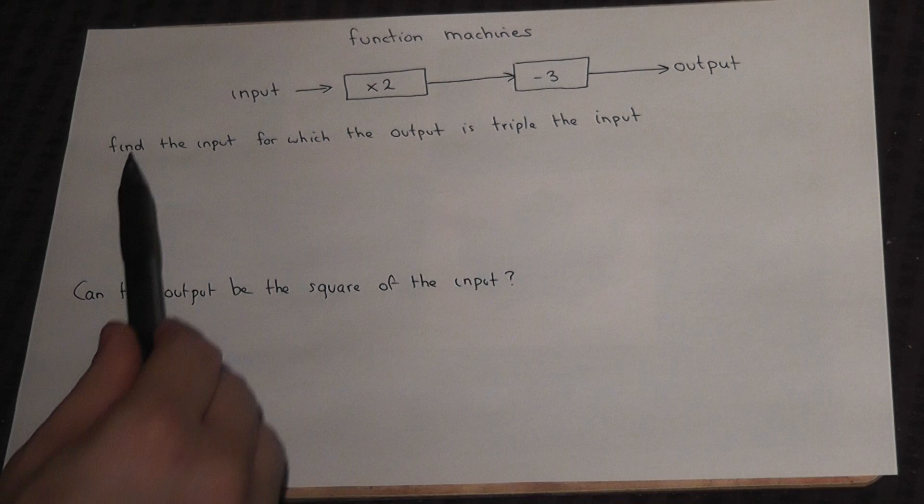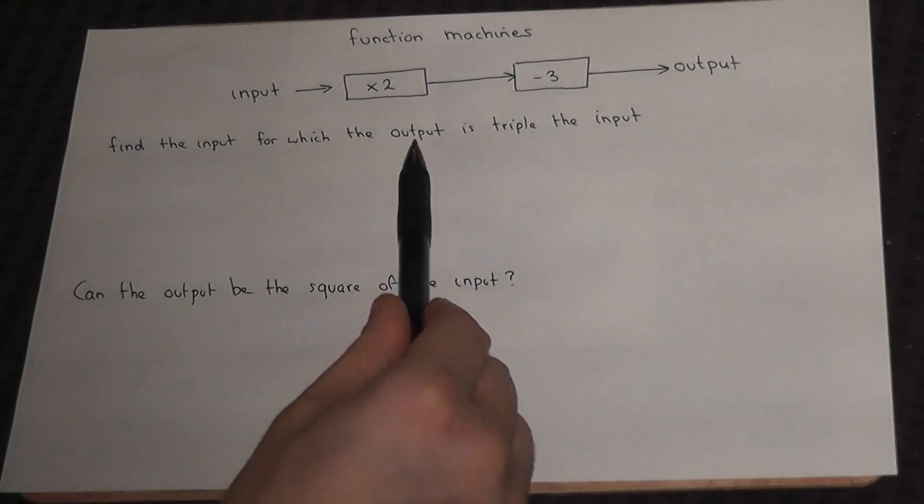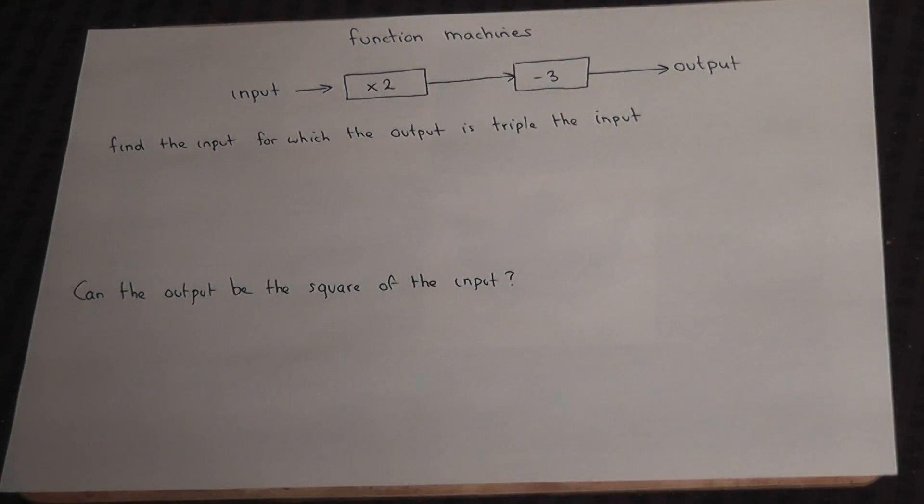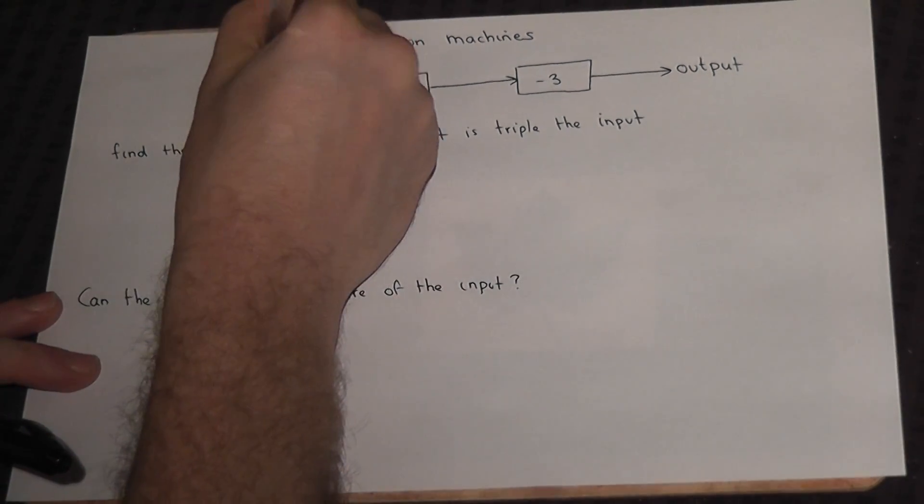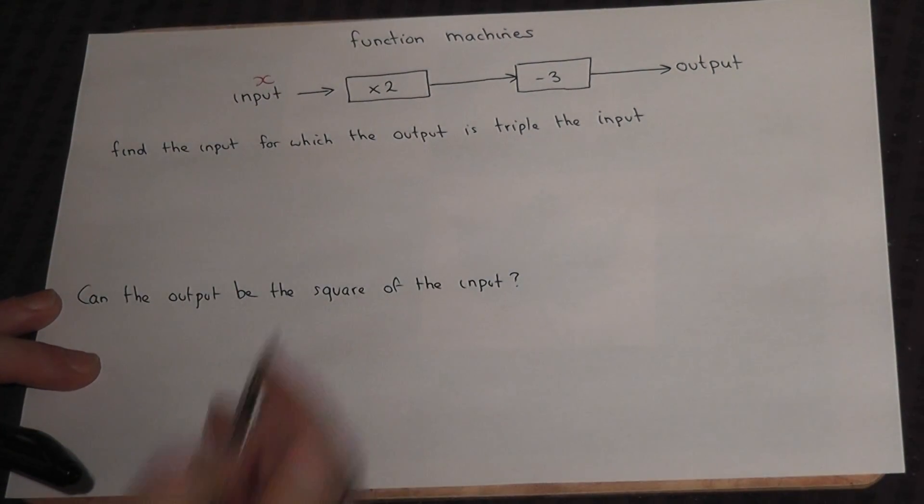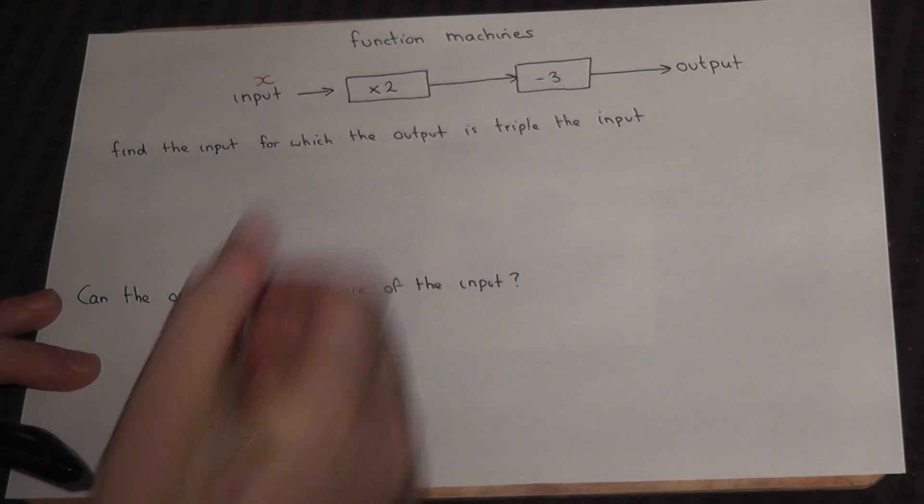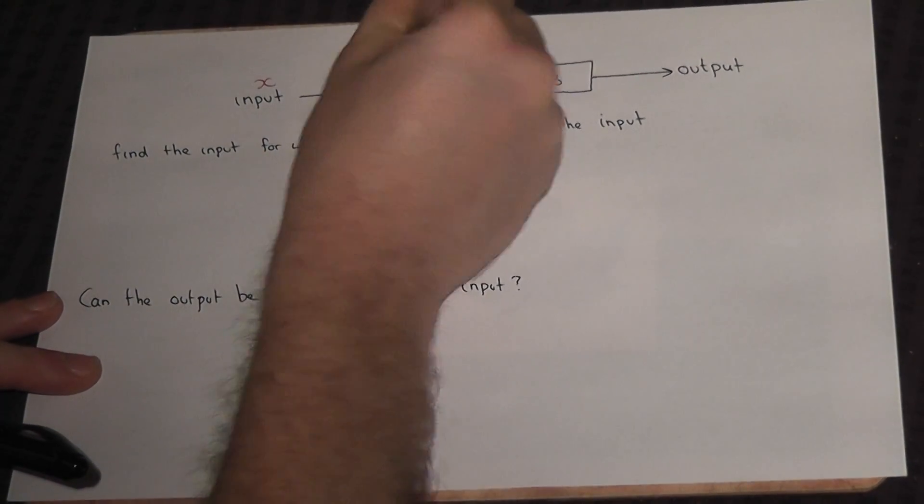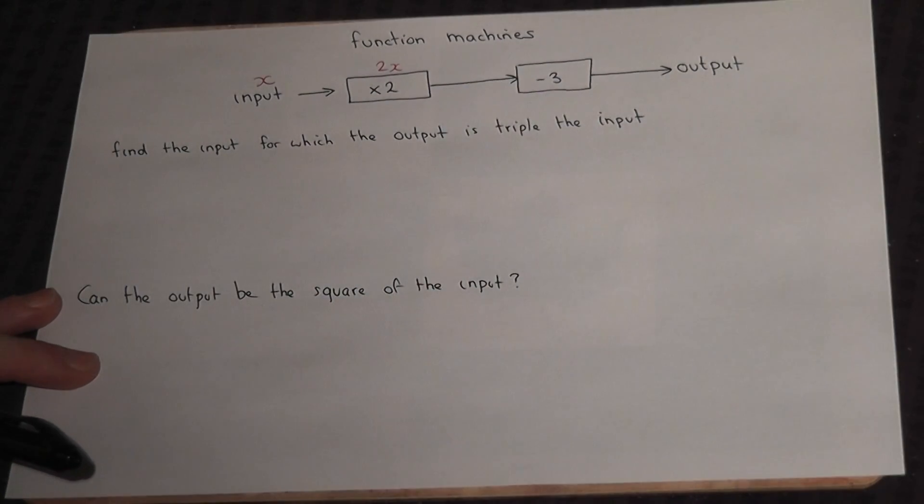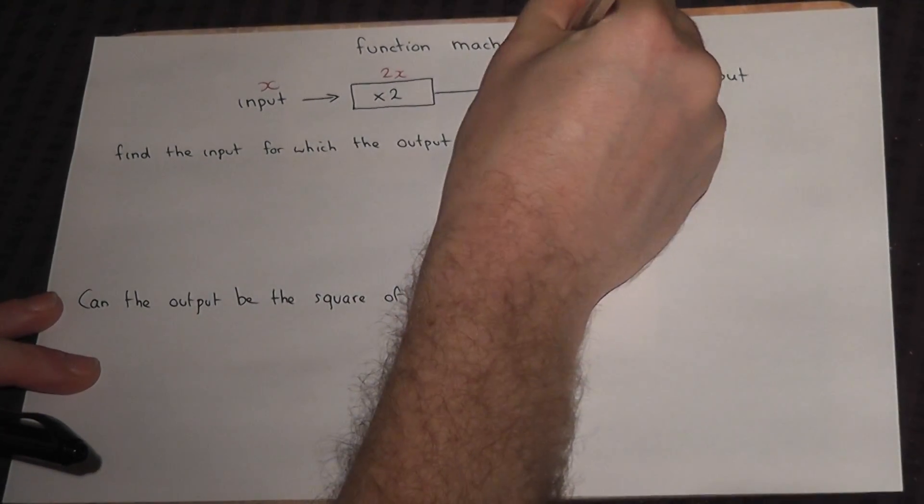However, the question says find the input for which the output is triple this value. Now if we call the input x, then we times by 2 so we get 2x, then we take away 3, so that's 2x minus 3.